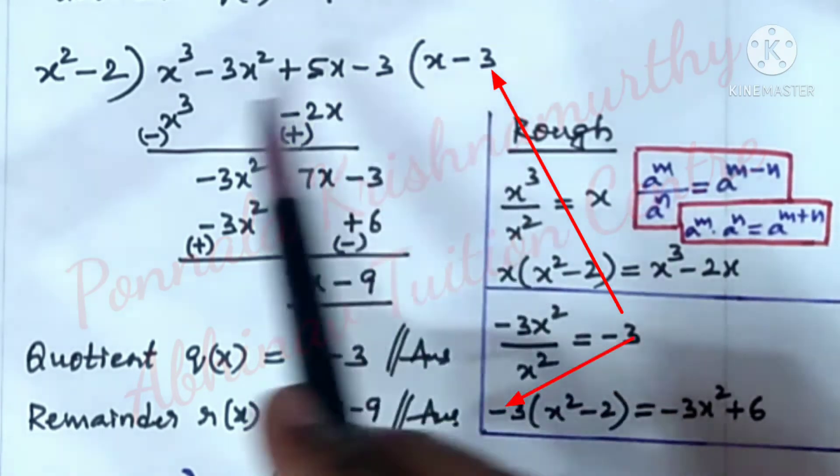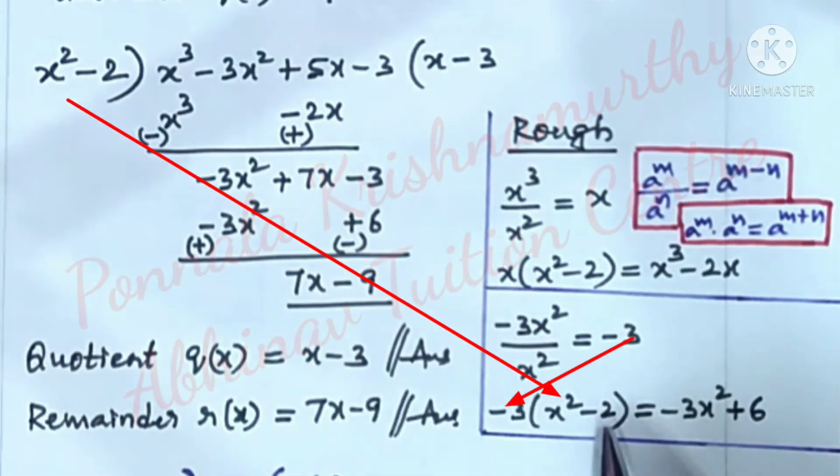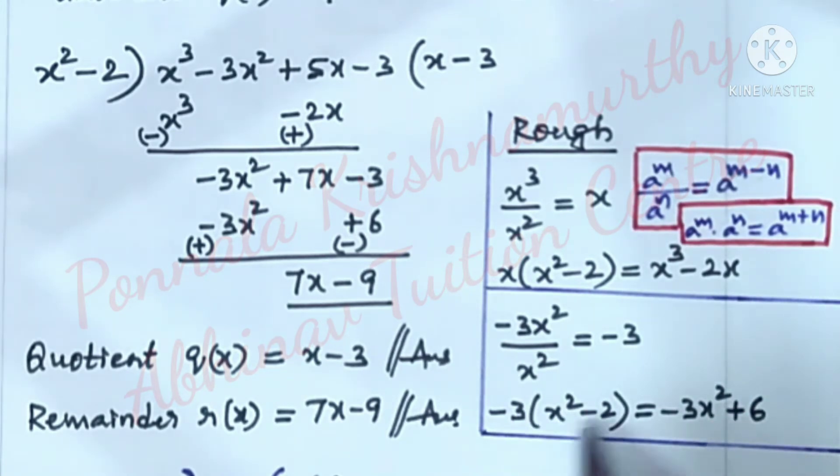Again, this -3 into x² - 2. Here we have minus into plus is minus. 3 into x² is 3x². Minus into minus is plus. 3 into 2 is 6.